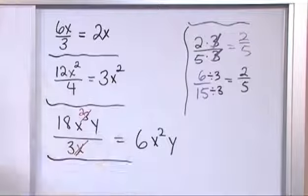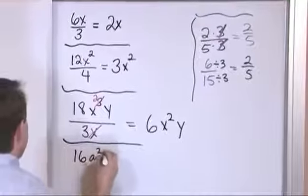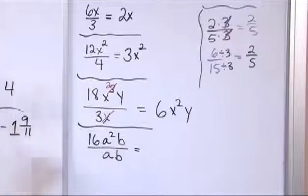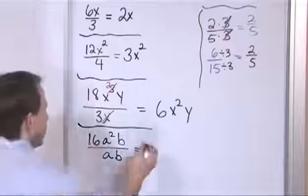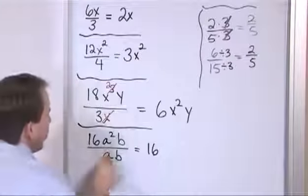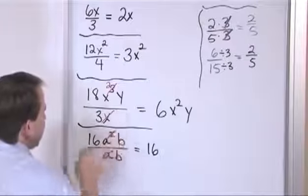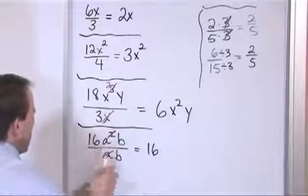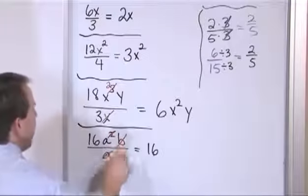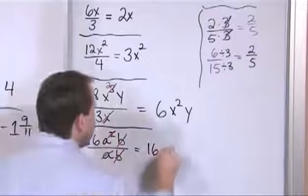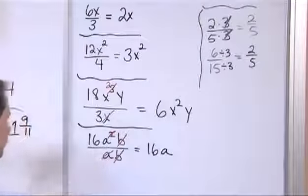Let's do more examples. 16a squared times b over a times b: the 16 has nothing on the bottom to divide with, so keep 16. You have one a on the bottom that cancels with this a squared — since a squared is a times a, one cancels leaving one a. This b cancels with this b since it's common to top and bottom. At the end you have 16a as the answer.